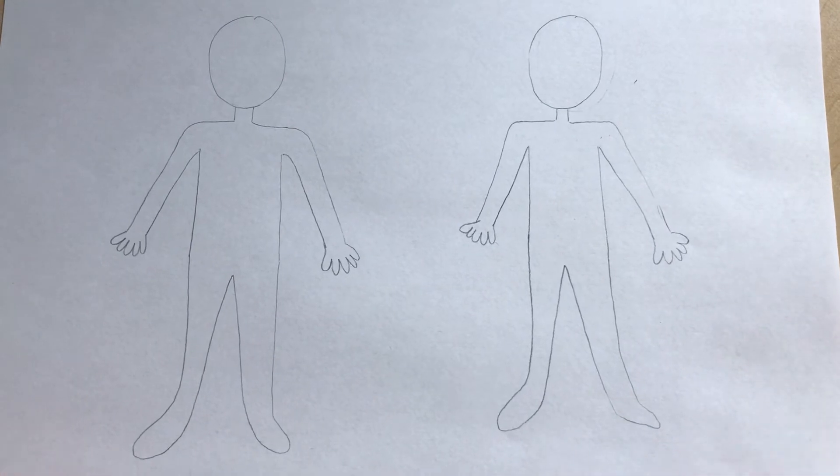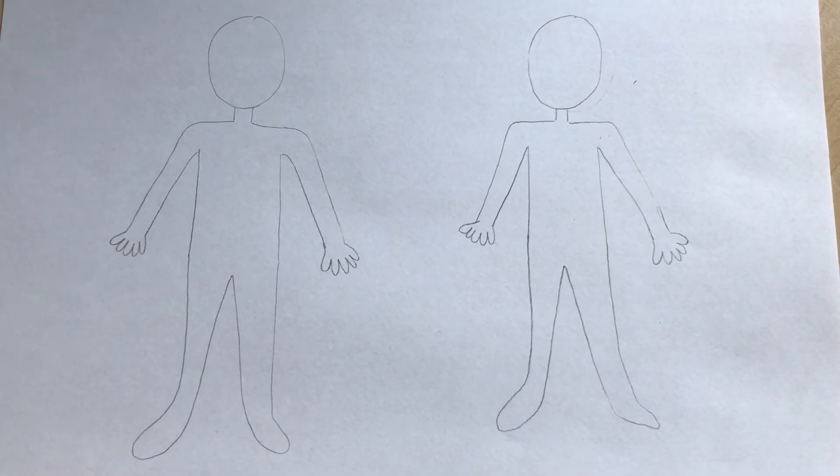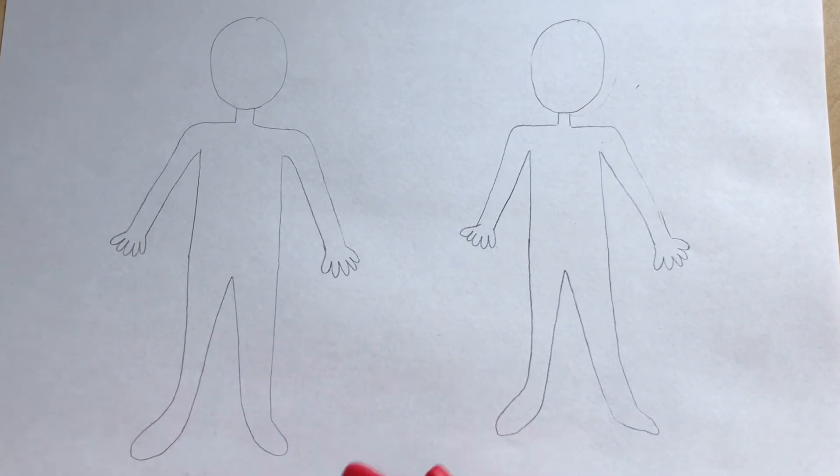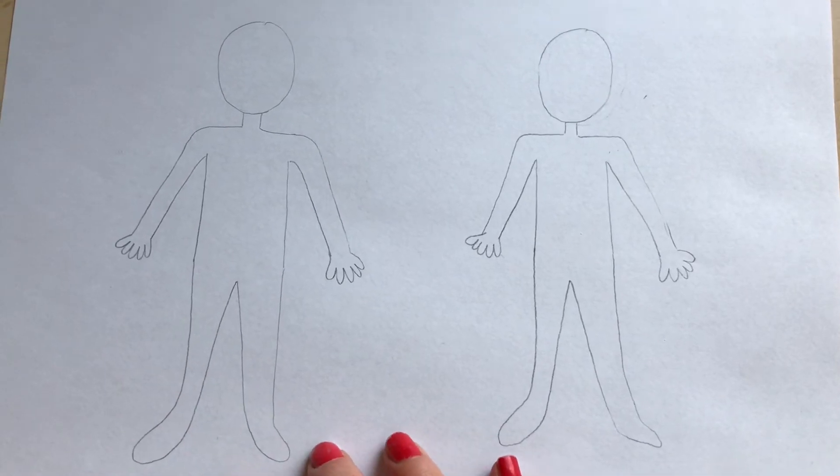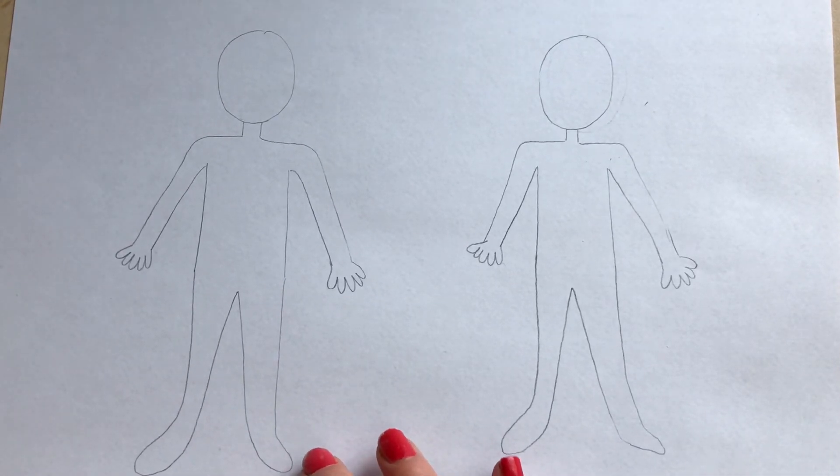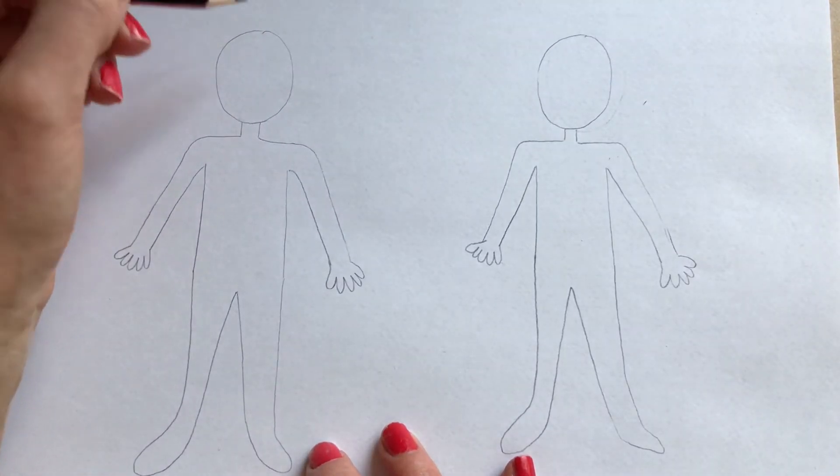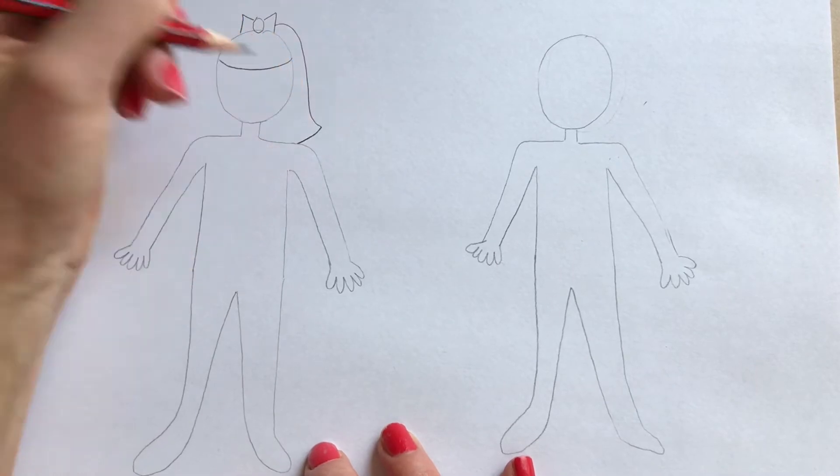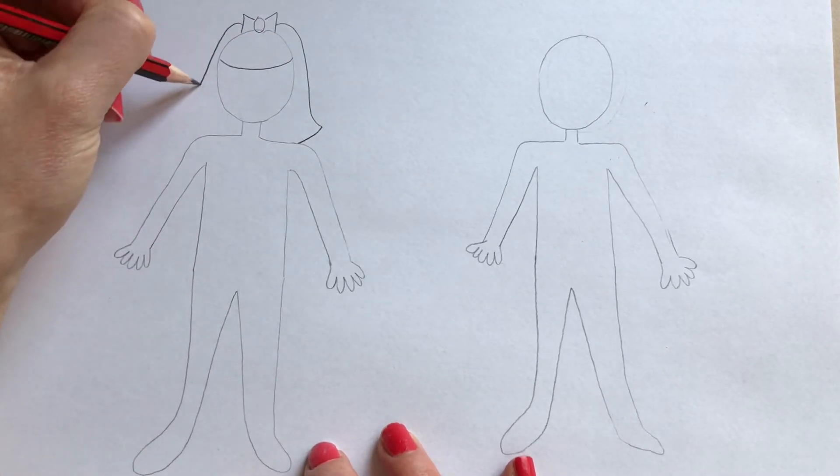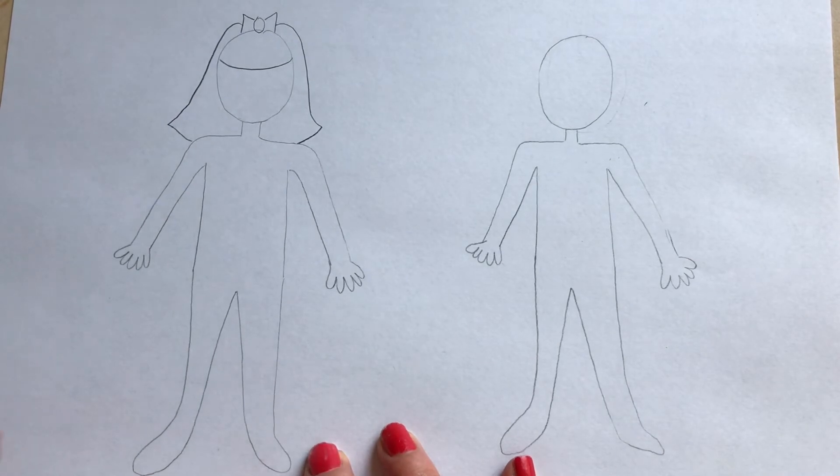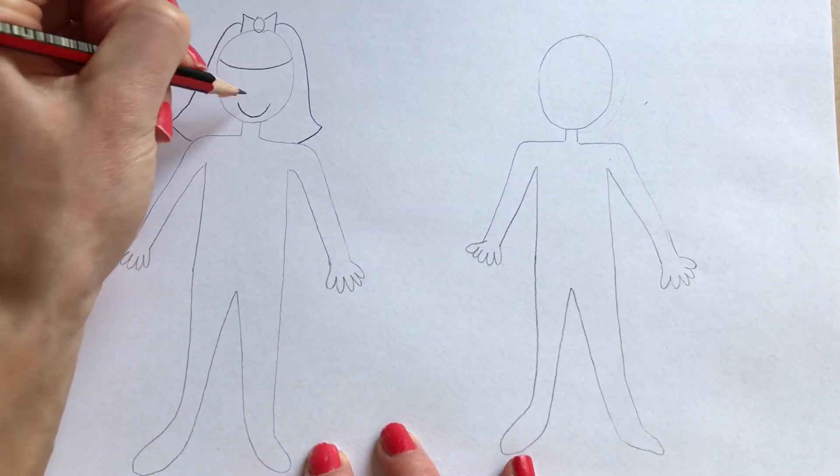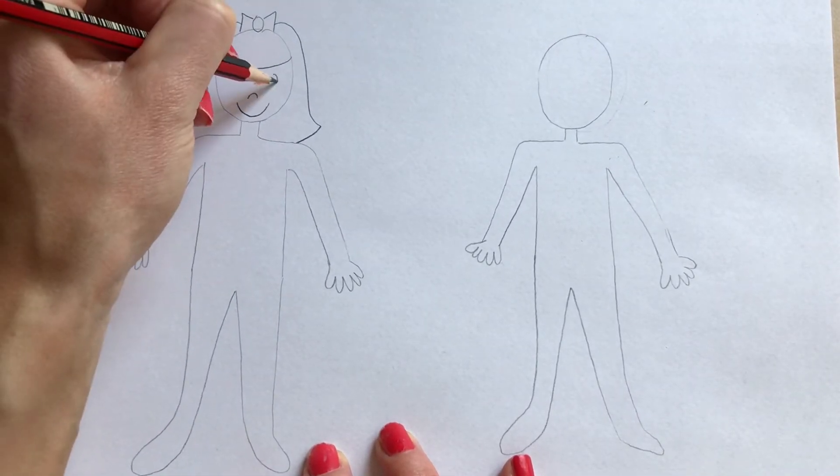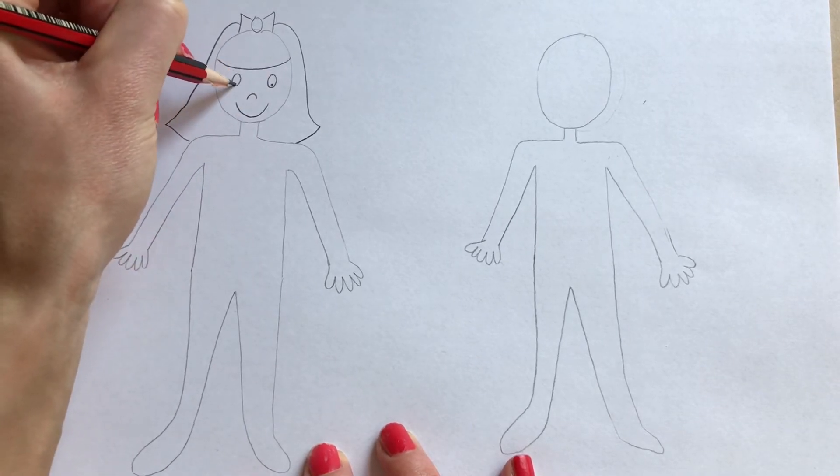Okay so now we have our two bodies and we're going to make them look more like people. So we'll start with this one over here. I'm going to make this one into a girl. So we're going to give our girl some hair. You could give your girl a ponytail. She could have long curly hair. She could have straight hair. I'm going to give her a fringe. I'm going to give her a bow in her hair and then she's going to have medium length hair like that and it's nice and straight. And I'm going to give her a smile, two eyes just like that.